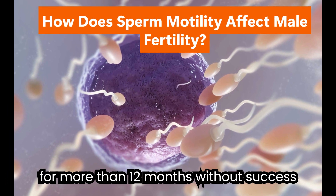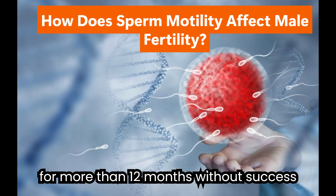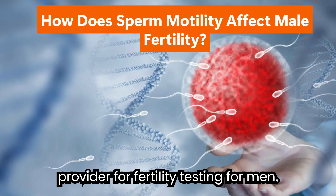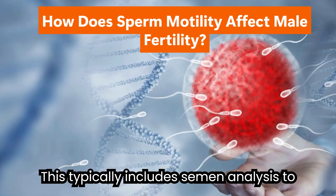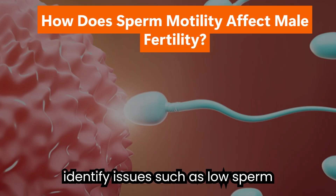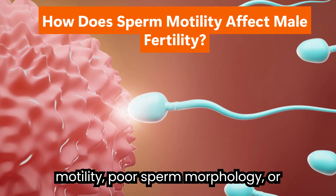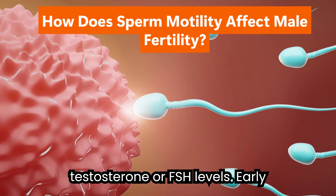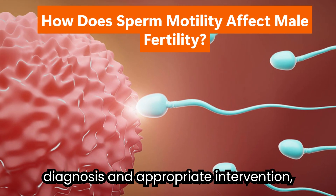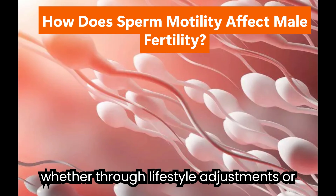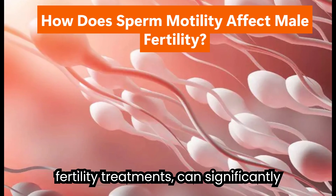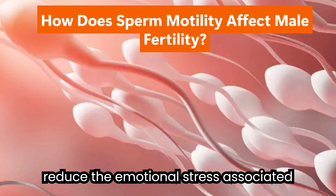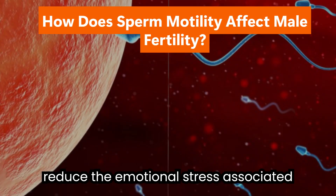When to seek help: anyone who has been trying to conceive for more than 12 months without success is encouraged to consult a healthcare provider for fertility testing. For men, this typically includes semen analysis to identify issues such as low sperm motility, poor sperm morphology, or hormonal imbalances such as irregular testosterone or FSH levels. Early diagnosis and appropriate intervention — whether through lifestyle adjustments or fertility treatments — can significantly improve the likelihood of conception and reduce the emotional stress associated with infertility.